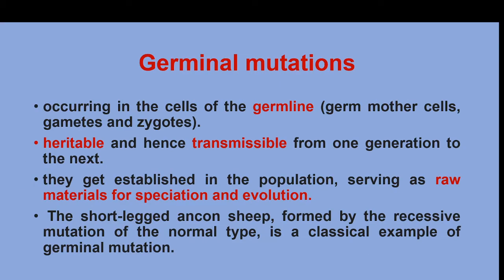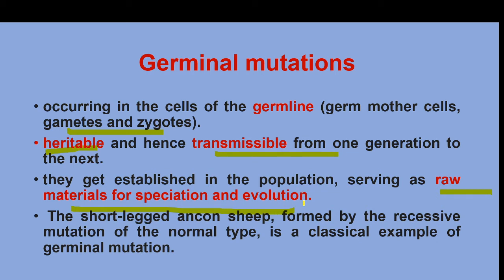Germline mutations affect the germline mother cells, gametes, and zygote. These are heritable mutations and serve as the raw material for speciation and evolution, making them significant at the population level.